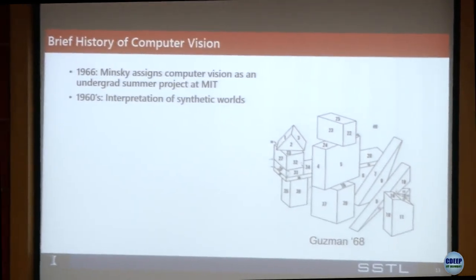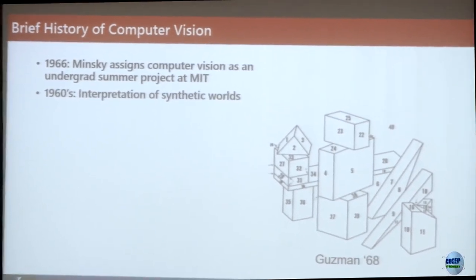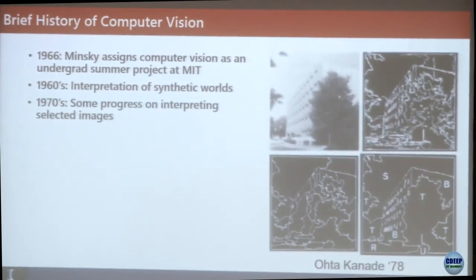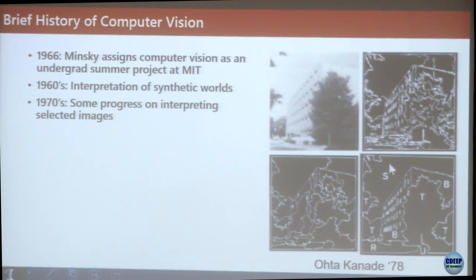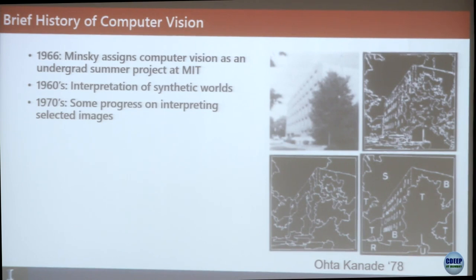In the 1960s, people started looking at images and trying to interpret synthetic worlds — blocks, columns, roofs. The 1970s brought more prevalent image interpretation with segmentation: identifying regions as sky, building, tree, or road, to train algorithms to understand what's in an image. The 1980s brought a shift towards geometry and increased mathematical rigor. Artificial neural networks were introduced but then went away — when I was a PhD student, the entire campus computer at the University of Illinois had only 24 megabytes of memory, making high-end neural network calculations impractical.